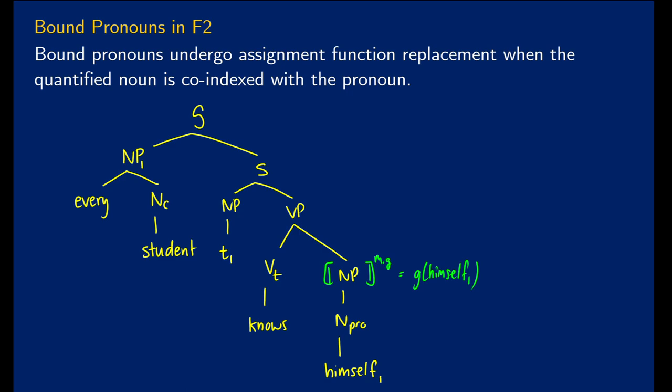So that'll be G of himself. The VP will be the set of X, such that X knows G of himself. So the sentence is going to be true if and only if G of our trace one is going to be an element of the set of X, such that X knows that this is going to be G of himself₁. So if every student knows himself, basically this is going to be in predicate logic for all X. If X is a student, then X is going to know X. So this is essentially what we're going for in the end.